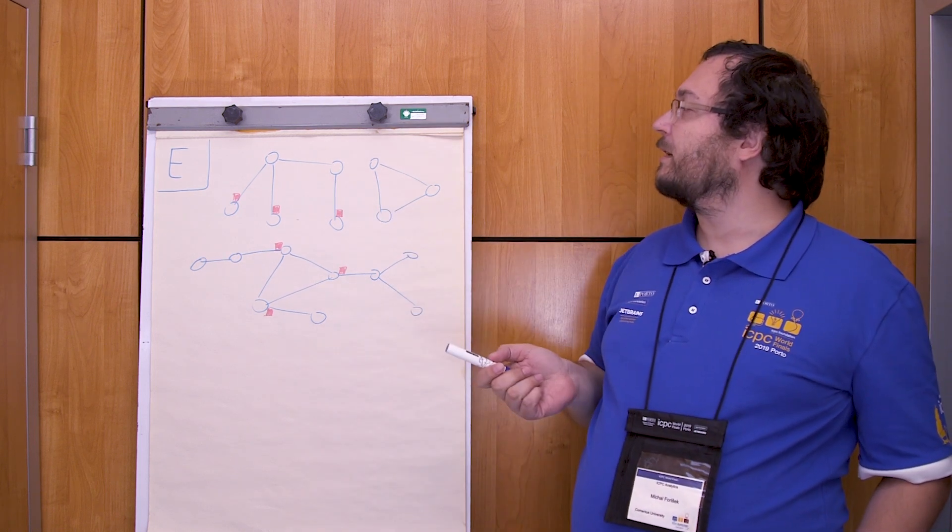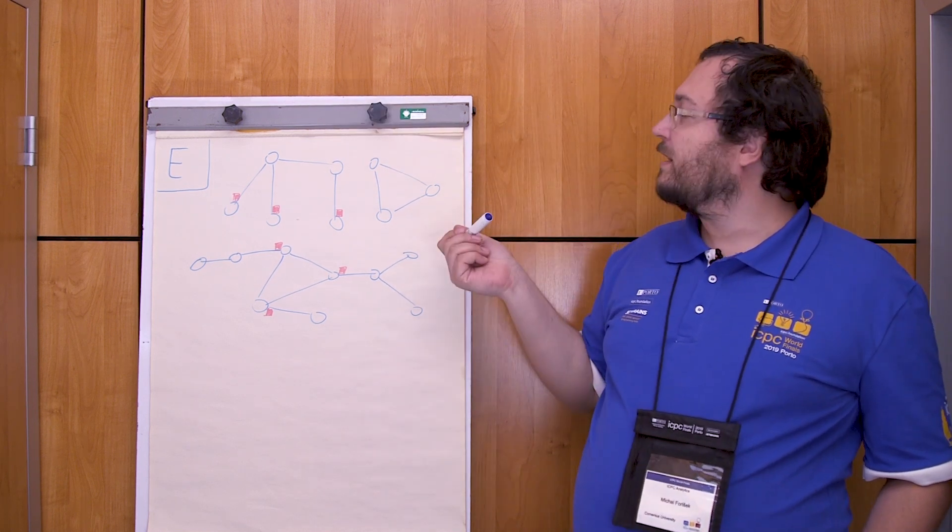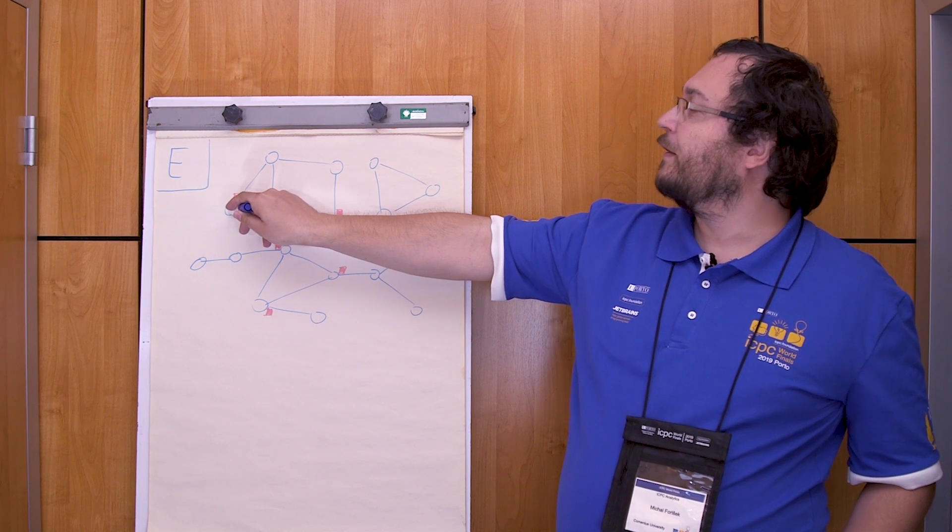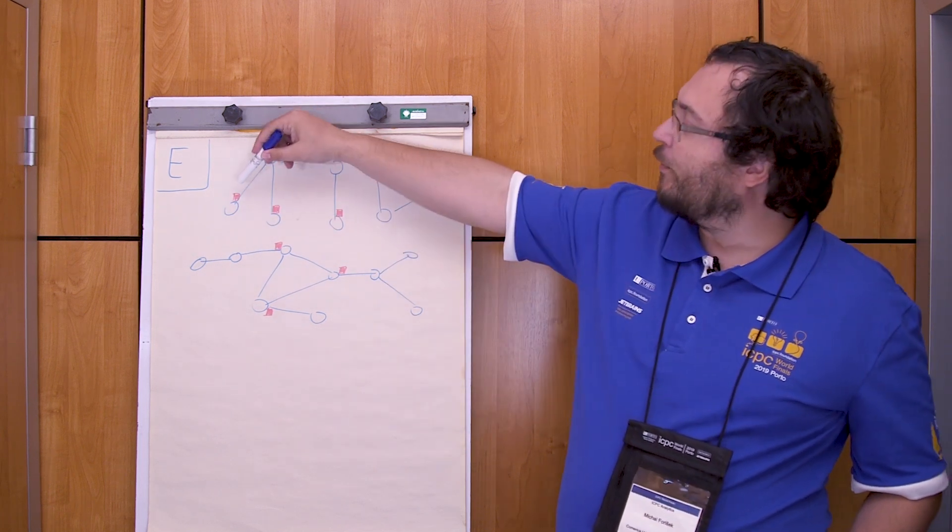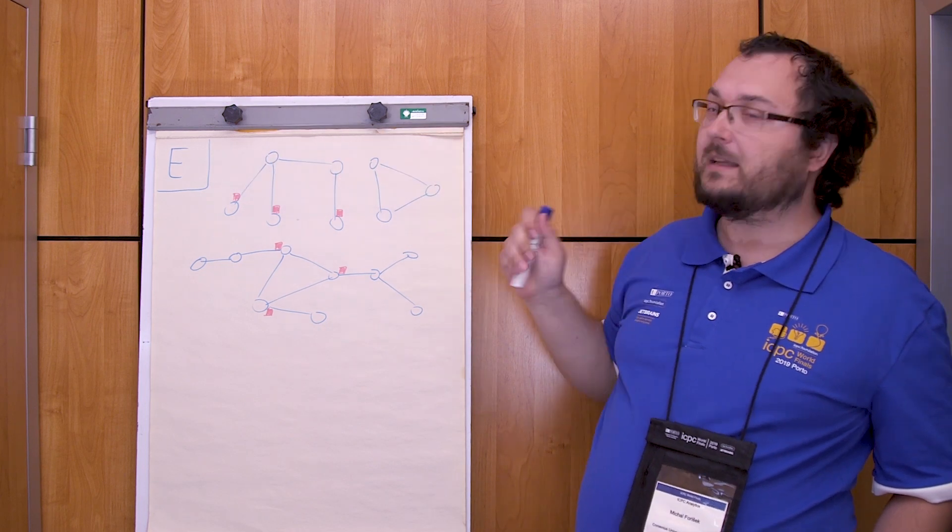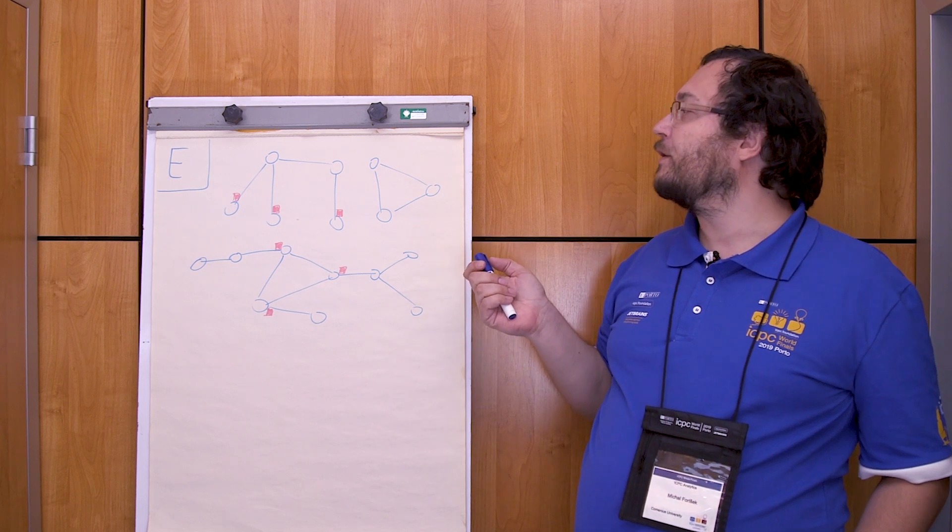One case is when we get a connected component like this one that is a tree. What do we see here? If a car starts in a leaf it's immediately entering something that is a dead end. So we have to place the dead-end signs next to each of the leaves and we can easily verify that this is sufficient.